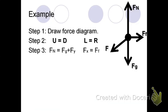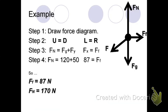Step four is simply to plug in the numbers that we were given. We figured out that Fg was 120. We were given that the Y component of the applied force was 50. We were given that the X component of the applied force was 87. So from here, we can see the normal force is 120 plus 50. That's 170 newtons. And the friction force is going to be 87 newtons.